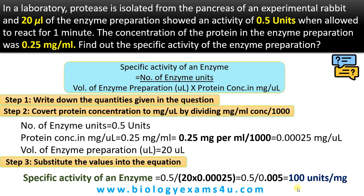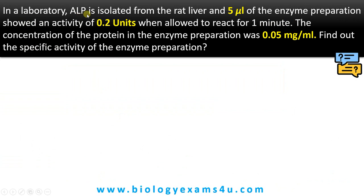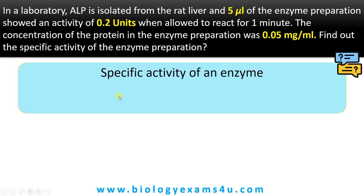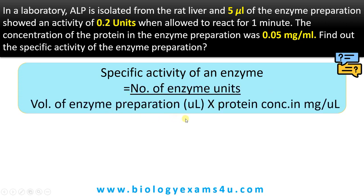Let us do one more question. In a laboratory, alkaline phosphatase is isolated from the rat liver, and 5 microliters of enzyme preparation showed an activity of 0.2 units when allowed to react for 1 minute. The concentration of the protein in the enzyme preparation was 0.05 mg per ml. Find out the specific activity of the enzyme preparation. The equation is: specific activity equals number of enzyme units divided by volume of enzyme preparation in microliters times protein concentration in mg per microliter.